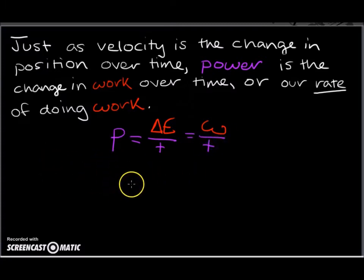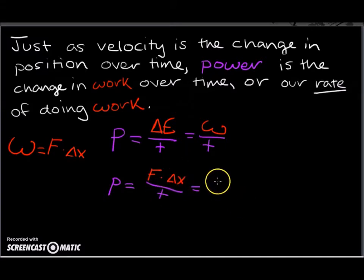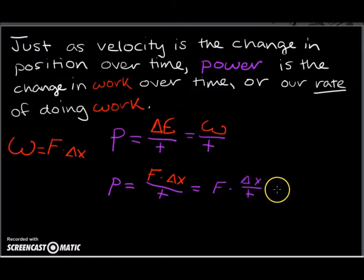Another way to think about this: because P equals delta E over T, and because work can equal force times change in distance, we can also say that power equals F times delta X over T. And since delta X over T equals velocity, we can say that power equals F times average velocity.